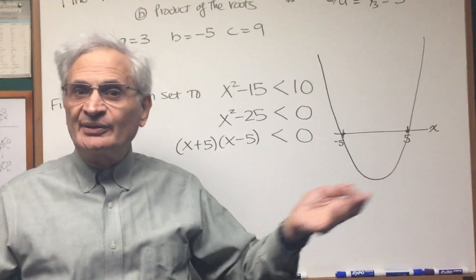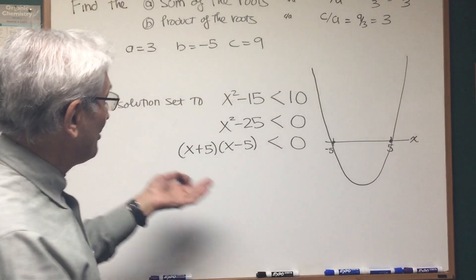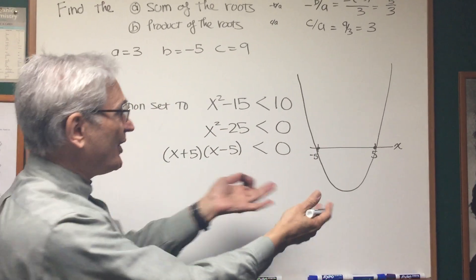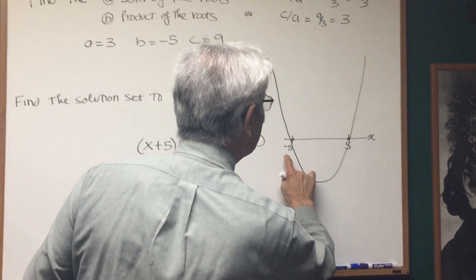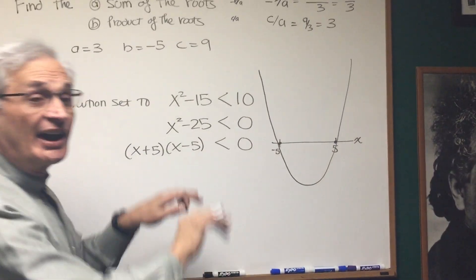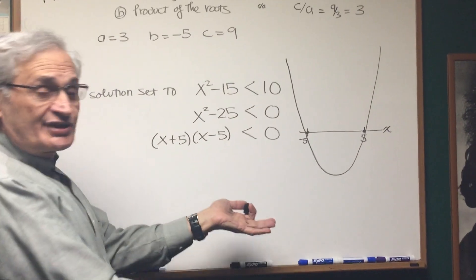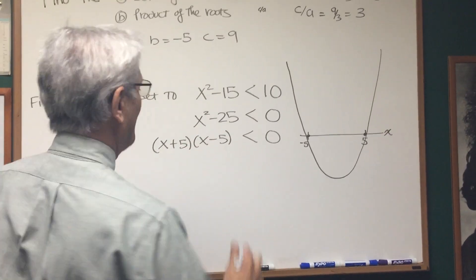Problem solved! You didn't even realize it was solved, it was so quick. We want to know when this expression is less than zero. Well, look at the graph. It's less than zero between -5 and 5, exclusive of the endpoints, because we don't want it to equal zero, just less than zero. So this is a visual problem.